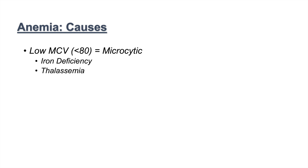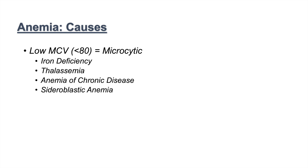Other causes of microcytic anemia include some genetic causes. Thalassemia is one of them. There's also anemia of chronic disease — if patients have chronic kidney disease or diabetes, they can have microcytic anemia. There's also sideroblastic anemia, and lead poisoning as a potential cause as well.